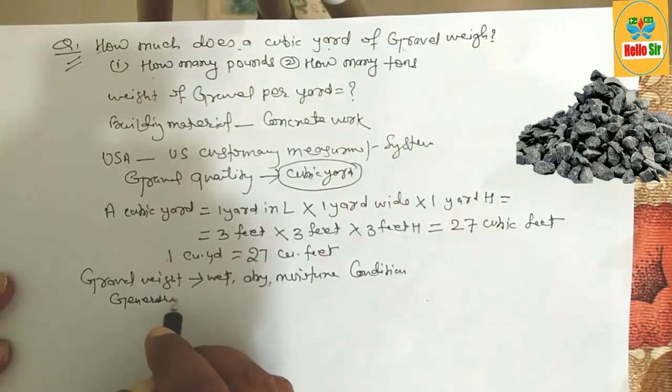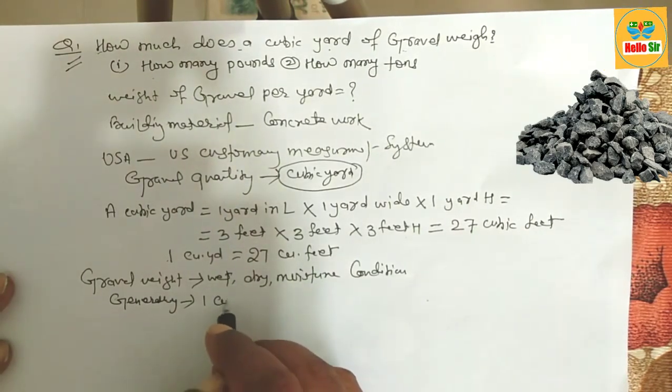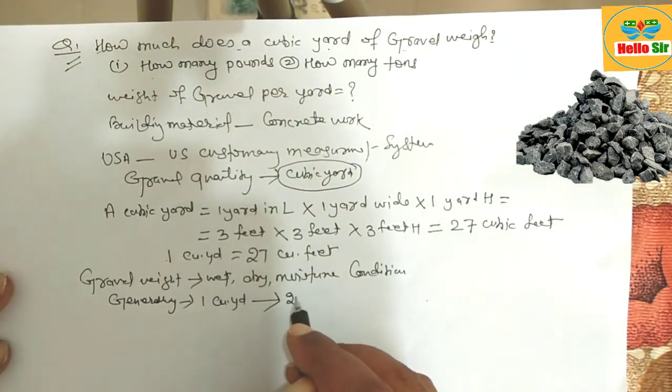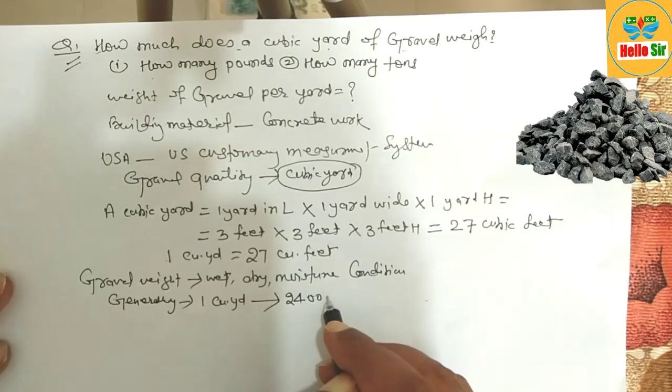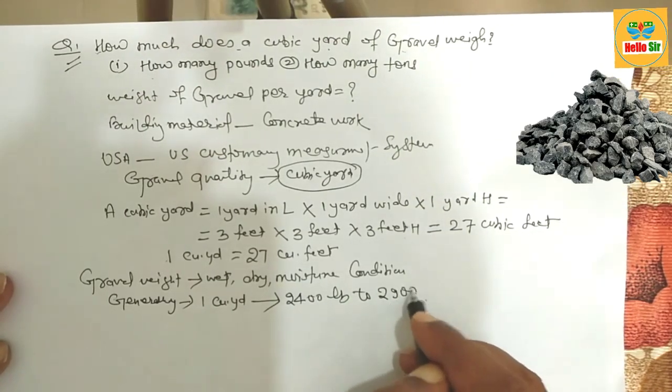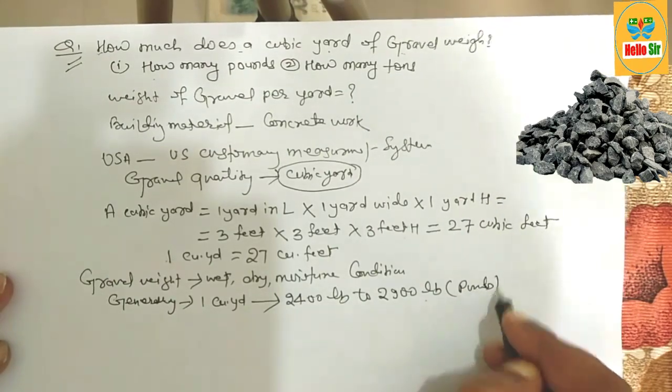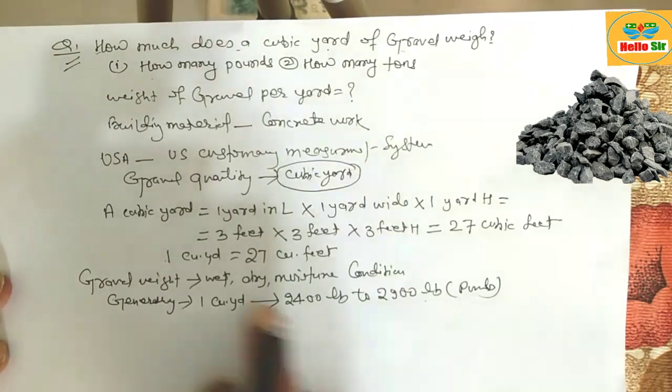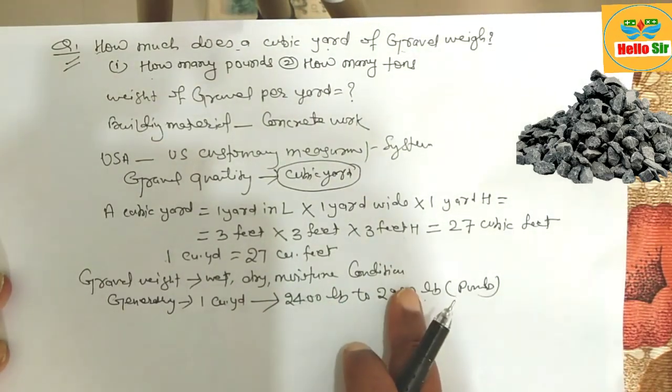Generally, a cubic yard of gravel weighs around 2,400 pounds to 2,900 pounds. That's quite a large difference, varying according to wet, dry, and moisture conditions.